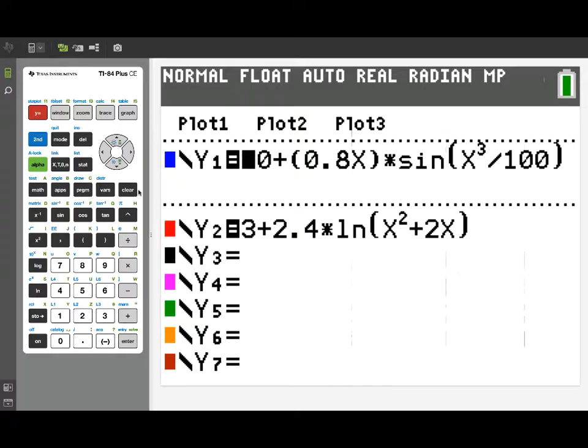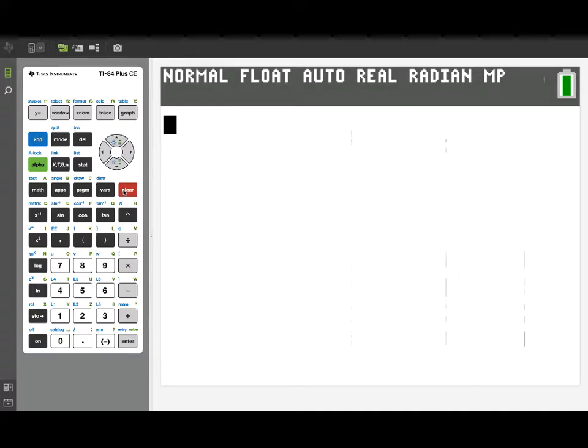Here we can see those two functions. Now, in the problem itself, these are presented as functions of time t, but because the TI-84 uses x as an independent variable for functions, we've switched t to x. So y1 is a rate of removal in pounds per hour over the entire 0 to 12 time interval, while y2 is a rate of addition that starts at time t equal 3.